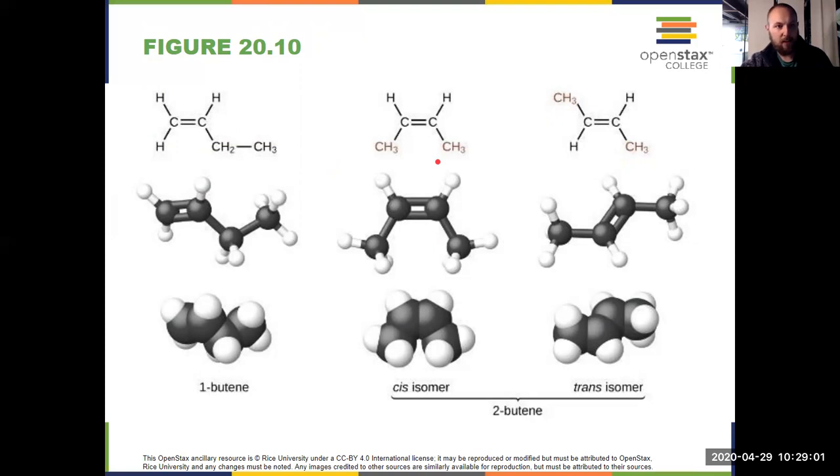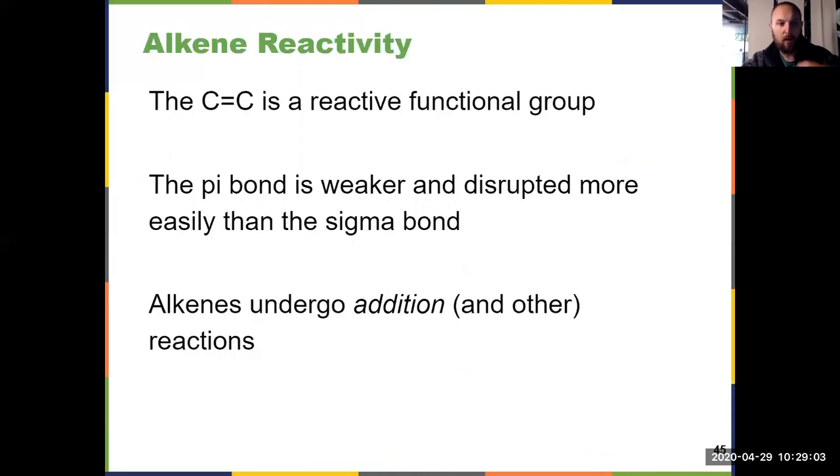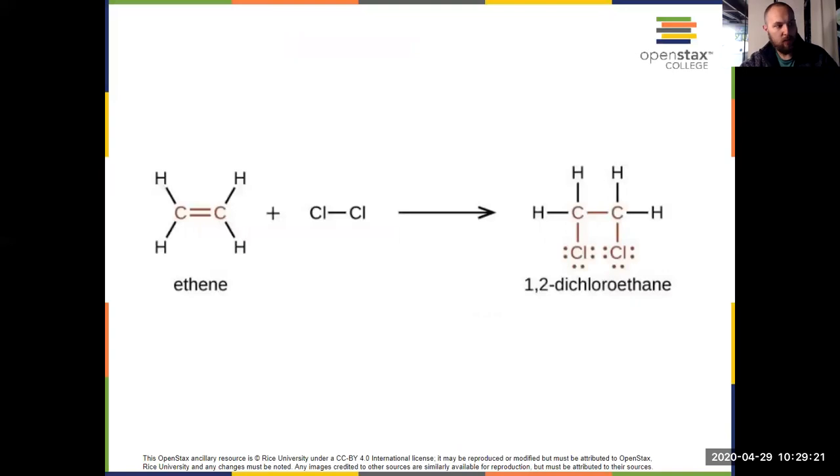What kind of reactions do our alkenes do? Well, that carbon-carbon bond is a reactive functional group. It's known as a nucleophile in organic because the pi bond is weaker and it can react. So alkenes do lots of reactions, but a common one that you see is known as an addition reaction, which is shown right here. Notice the chlorine has just added to the molecule, whereas with the alkane, chlorine replaced something. It was a substitution reaction. Here, this is an addition reaction.